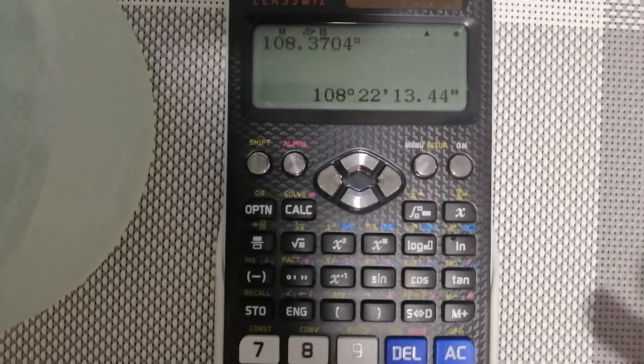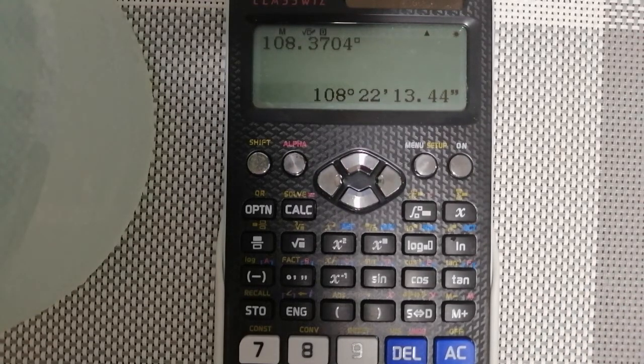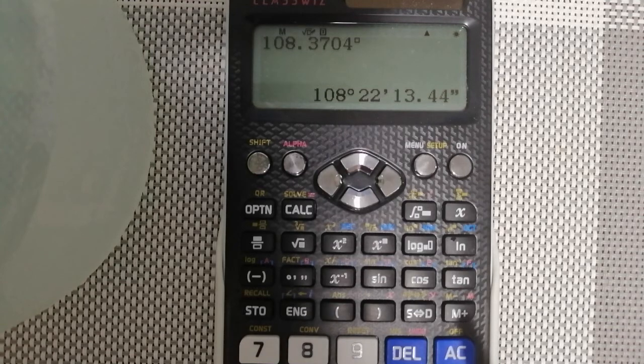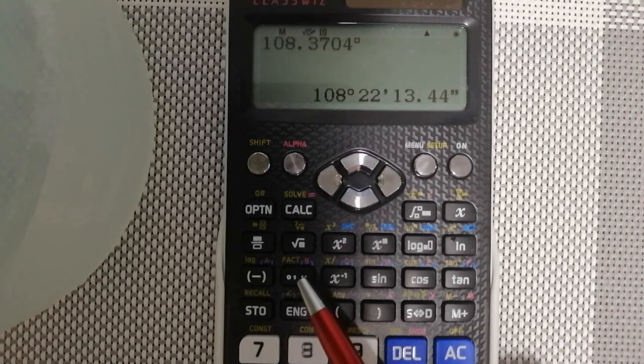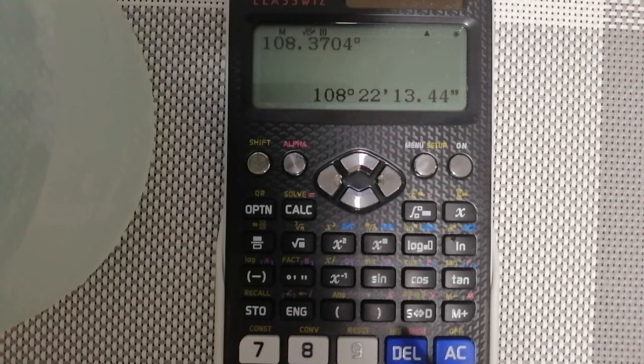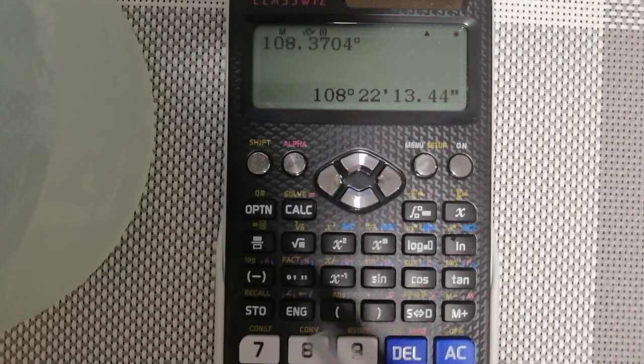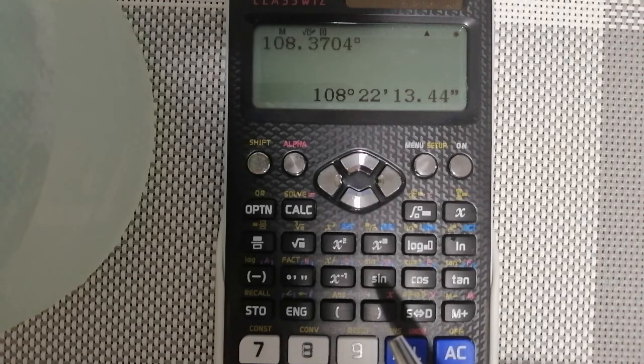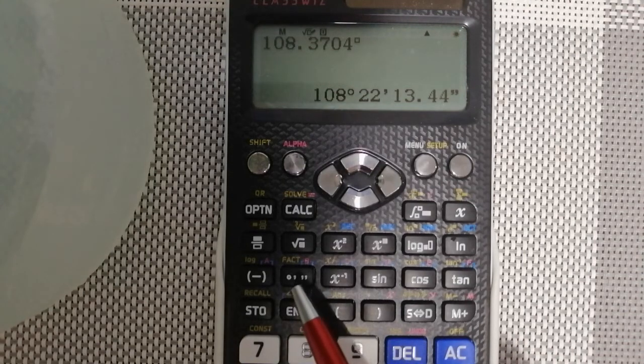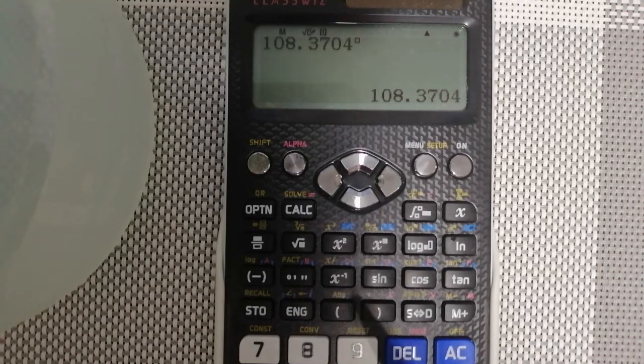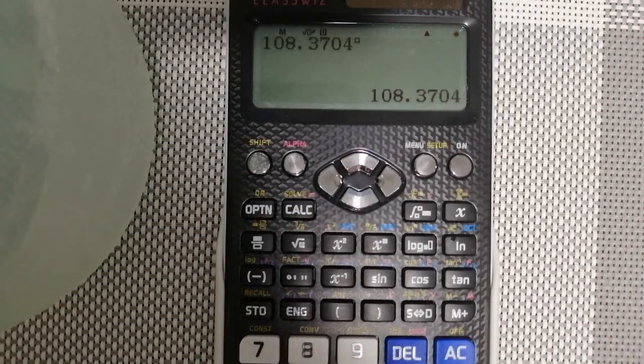By pressing equal sign or enter, lilitaw yung automatic na DMS format nya. Kung hindi naman, pwede rin naman na i-select nyo lang ito kung previous model ang gamit ninyo. So, tama yung conversion natin kanina. Ngayon, what if gusto kong ibalik into decimal degrees? Pupwede. Kailangan nyo lang i-select ulit ito para maging 108.3704 decimal degrees ulit sya.